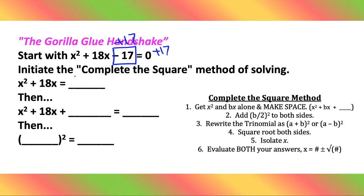Then we would want to complete the square by adding half b squared to both sides. So 18 divided by 2 is 9. 9 squared is 81. So we would dump an 81 in there.